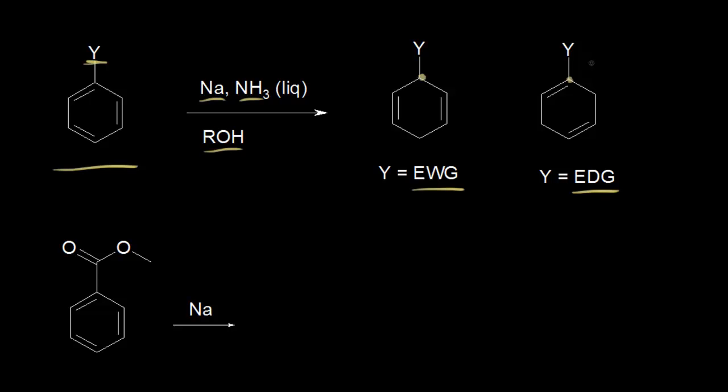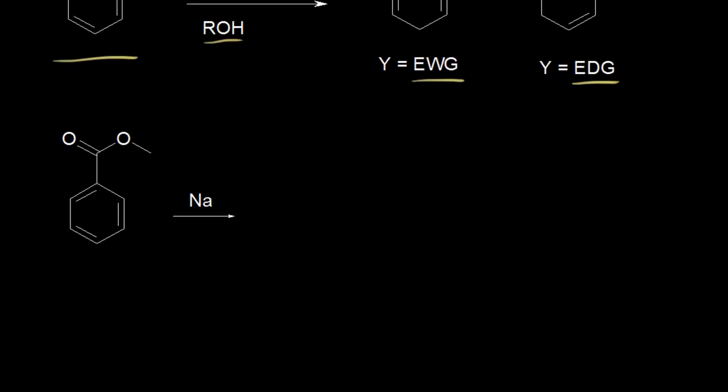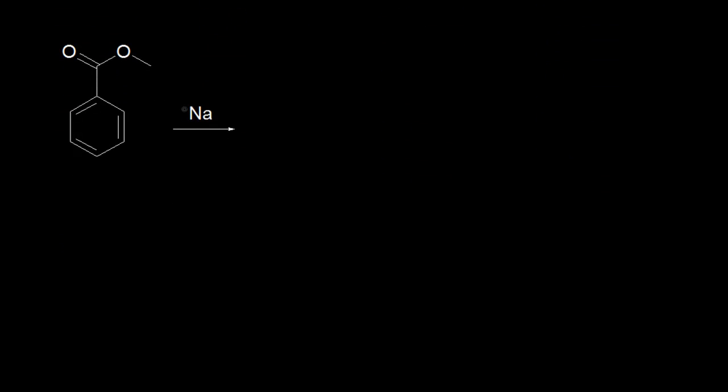We'll start with an electron withdrawing group — here we have an ester on our benzene ring. We start with sodium, which has one valence electron. This lone electron on sodium is going to be donated to this carbon. We have a bond here consisting of two electrons: one of those electrons is going to move out onto that carbon, and one is going to move into here. With our other bond, a similar idea — one electron moves in here, and one moves off onto this carbon.